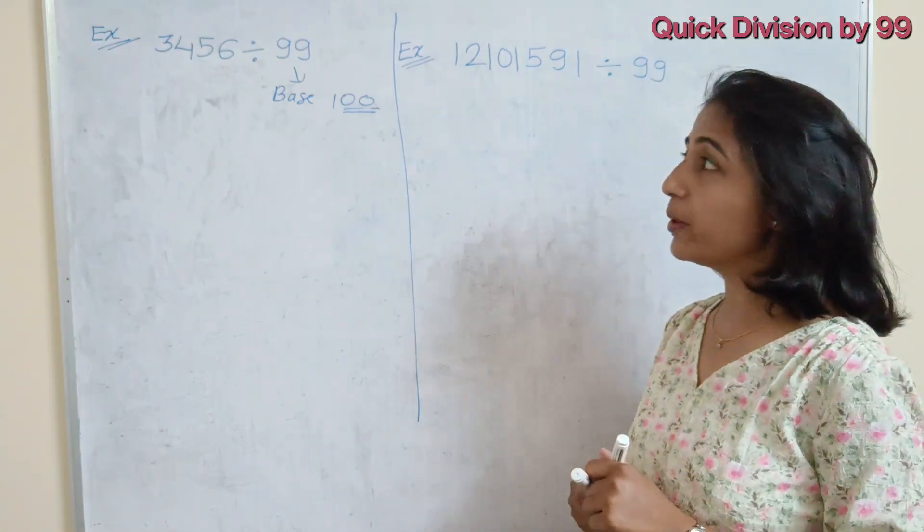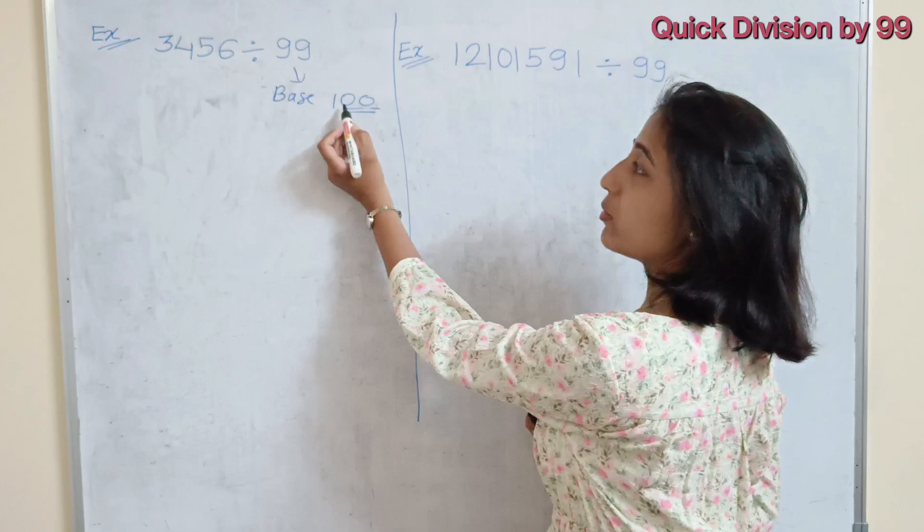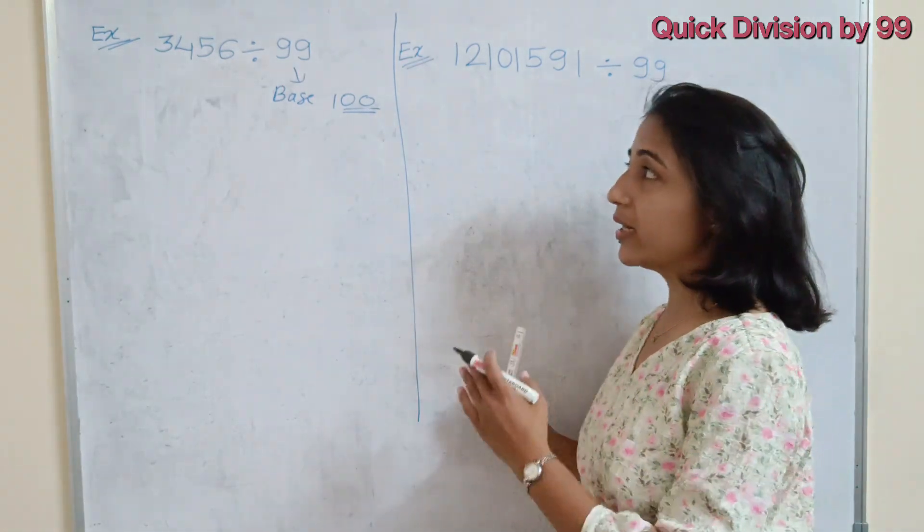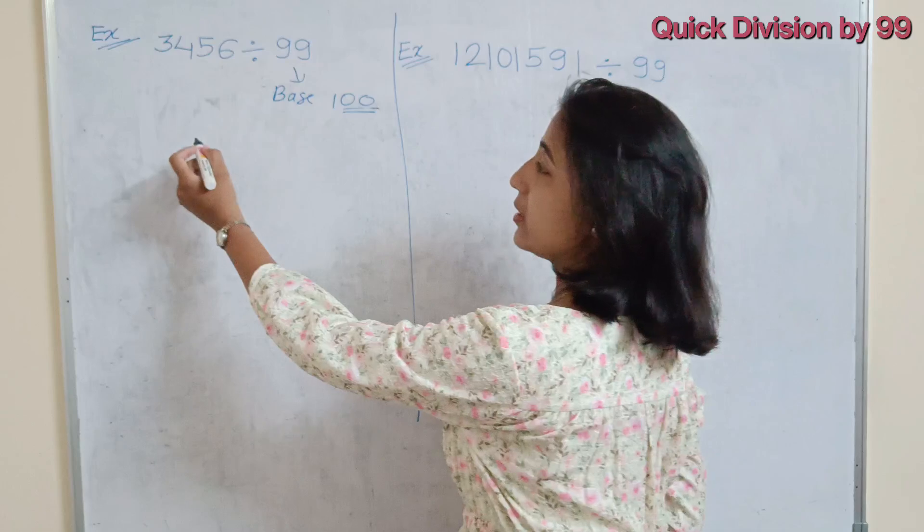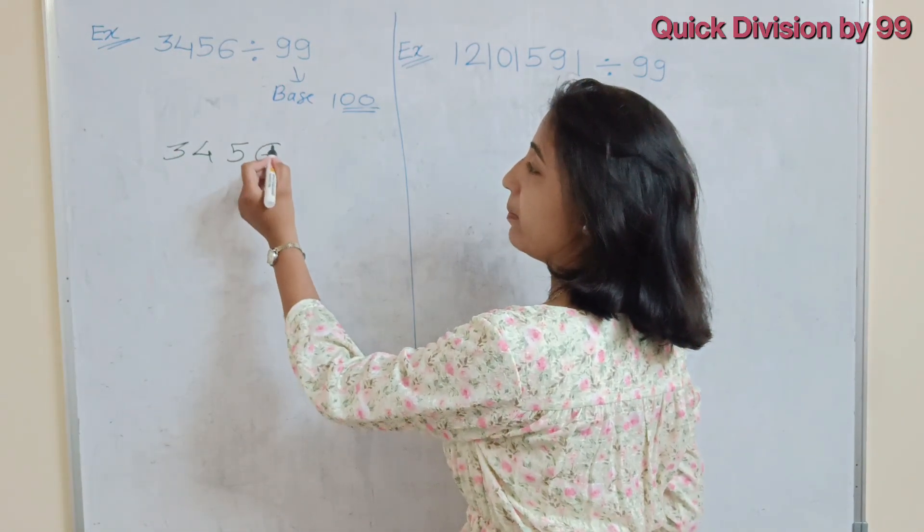So here we have to make the grouping of this number, make the pair of 2, 2 because 100 contains 2 zeros. That is why we are making the number in the pair of 2, 2. So this is our number 3456. If we make the pair of 2, 2.